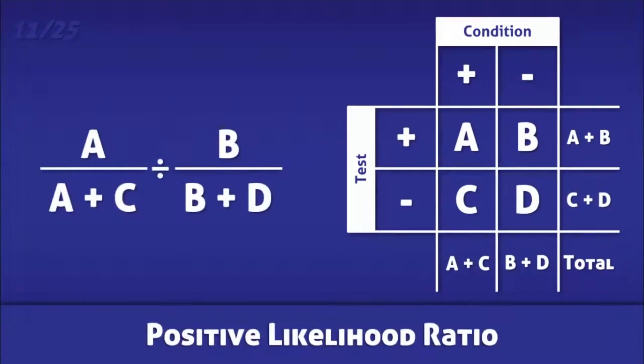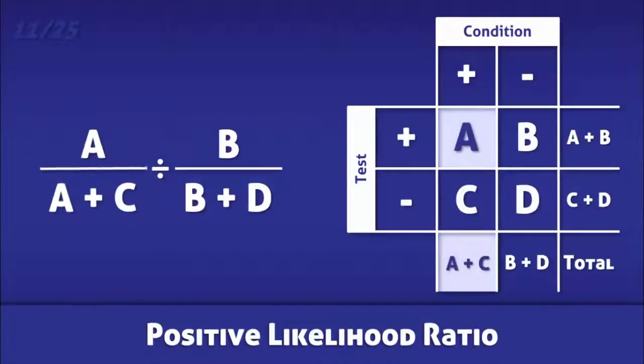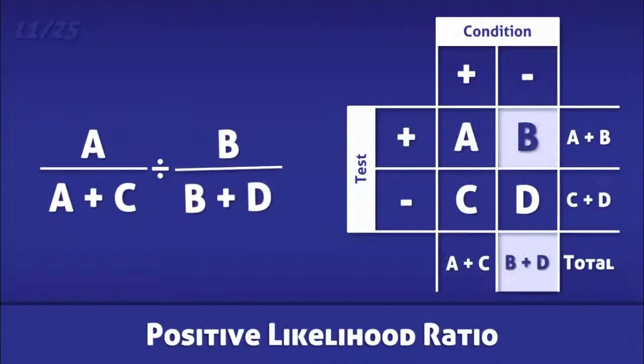The positive likelihood ratio is the likelihood that an individual with a positive test actually has the condition being tested for. It is calculated by dividing the true positive rate, which is the sensitivity of the test, by the false positive rate.